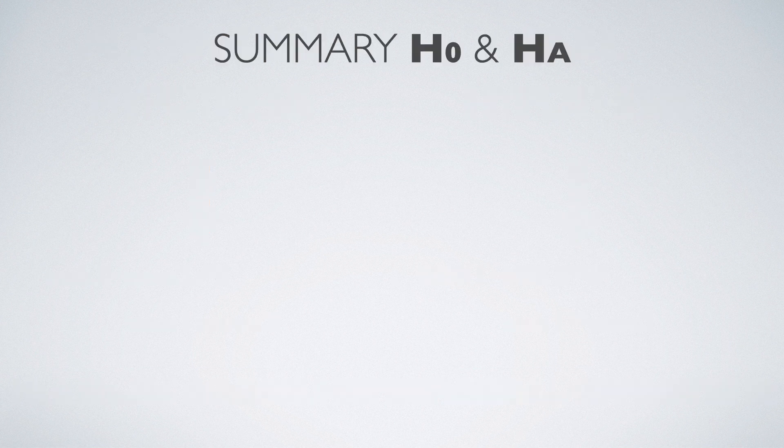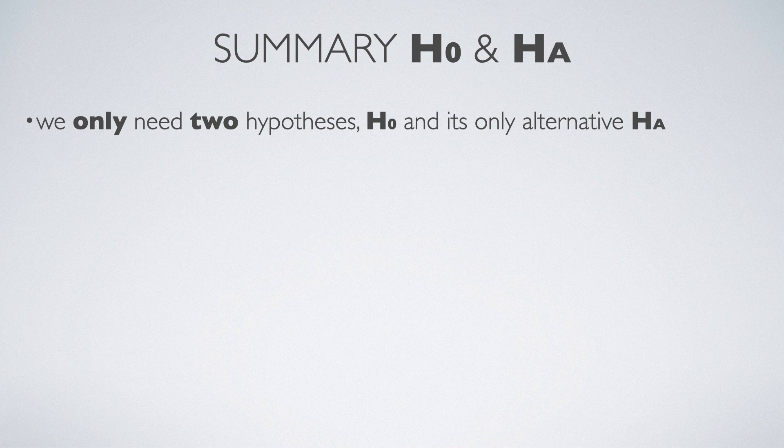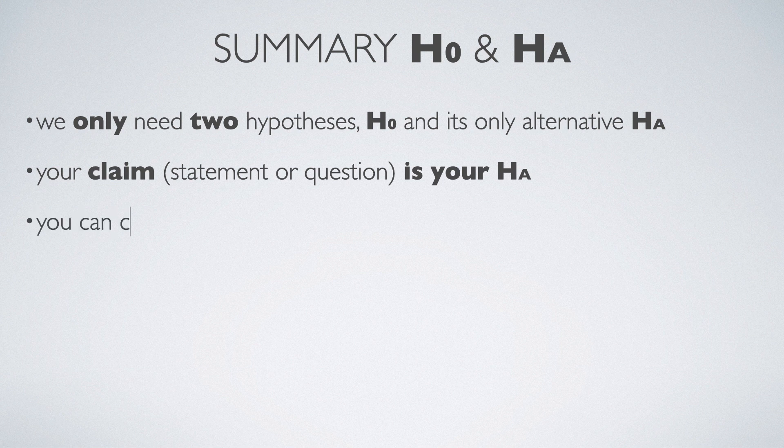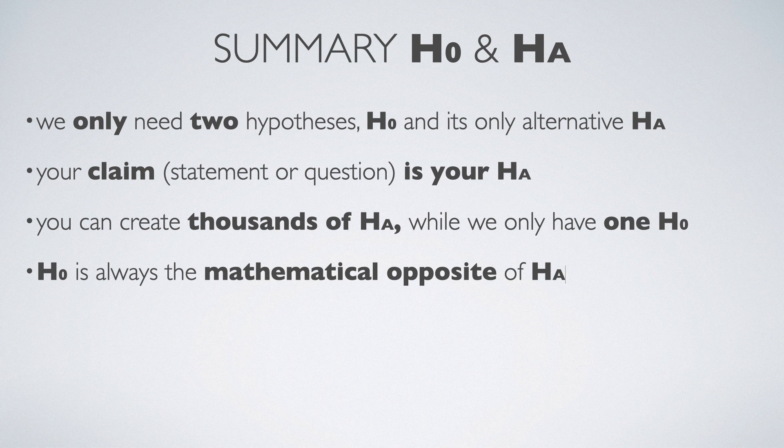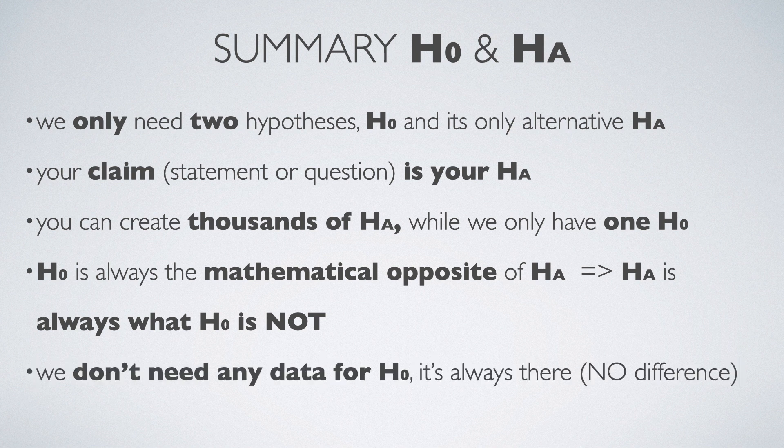And here is the summary of what we have learned so far. In order to answer a question or make a solid claim from our data, we only need two hypotheses, null hypothesis and its only alternative, the alternative hypothesis. Your question, claim or statement is in fact your alternative hypothesis. The best part of the alternative hypothesis is that we can create thousands of them, because we can ask thousands of different questions or make thousands of different claims. But we always have only one null hypothesis. The beauty of the null hypothesis is that it is always the mathematical opposite of the alternative. Doesn't matter what the alternative is. So the alternative hypothesis is always what the null hypothesis is not. And the best part of the null hypothesis is that we do not need any preliminary data for it. It's always there. For example, no difference or no effect.